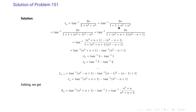We rewrite 1 plus n squared plus n to the power 4 as n squared plus 1 whole squared minus n squared. That becomes tan inverse of 2n divided by 1 plus (n squared plus n plus 1)(n squared minus n plus 1). This equals tan inverse of (n squared plus n plus 1) minus tan inverse of (n squared minus n plus 1), divided by 1 plus (n squared plus n plus 1)(n squared minus n plus 1). So this simplifies to tan inverse(n squared plus n plus 1) minus tan inverse(n squared minus n plus 1).